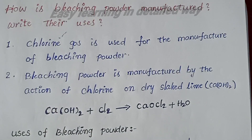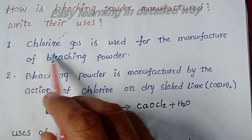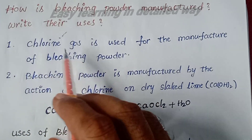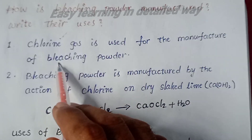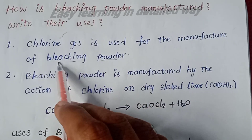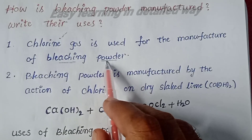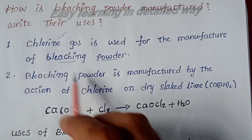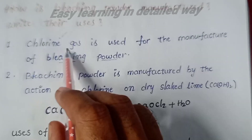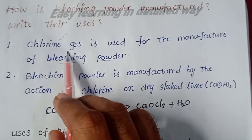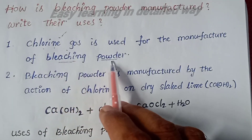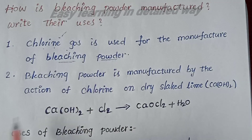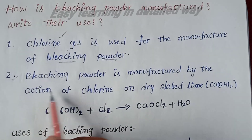First point: chlorine gas is used for the manufacture of bleaching powder. We need chlorine gas — this is the main component in the preparation of bleaching powder.